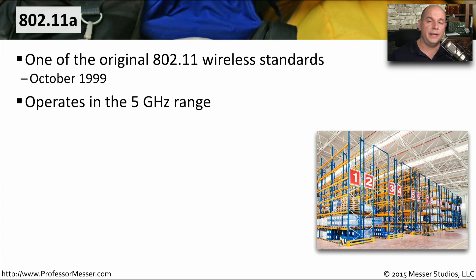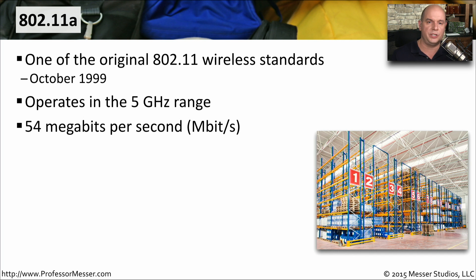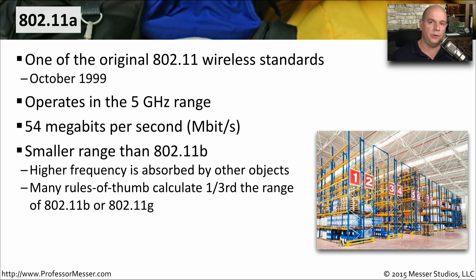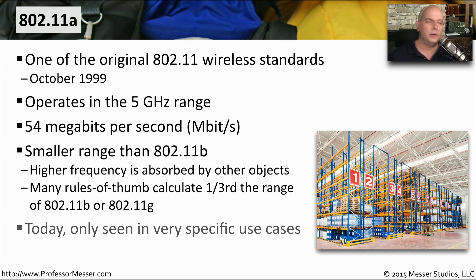802.11a operates in the 5 gigahertz frequency range and has a maximum theoretical throughput of 54 megabits per second. The distance you could communicate with 802.11a is a little bit smaller than with 802.11b, because the 5 gigahertz frequency range tends to be absorbed by objects rather than bouncing off them like it does in the 2.4 gigahertz range. Many people calculate the range of 802.11a as about a third of the range of 802.11b or 802.11g. We don't generally see 802.11a being used any longer.